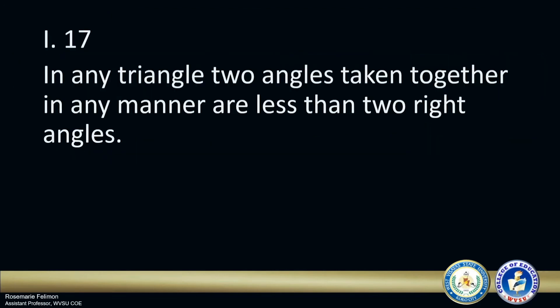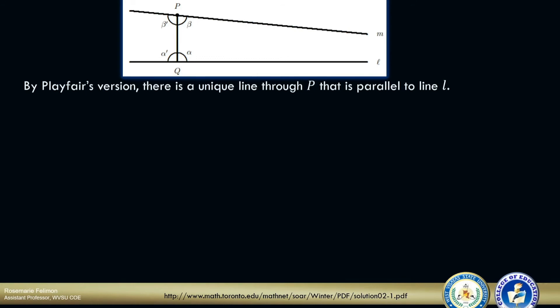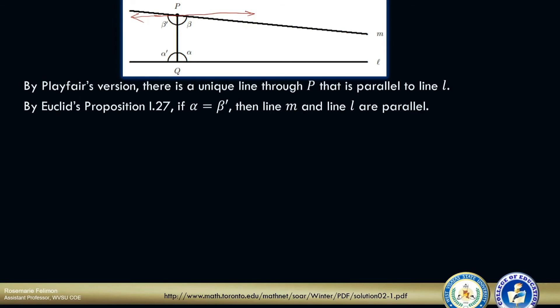In this proof, we will use the 17th proposition in Book 1. It states: in any triangle, two angles taken together in any manner are less than two right angles. It means that when you add the measures of two angles of any triangle, the sum must be less than 180 degrees. Based on Playfair's Axiom, there is a unique line through P that is parallel to line L. By Euclid's 27th proposition, if alpha equals beta prime — the alternate interior angles — then line M and line L are parallel.